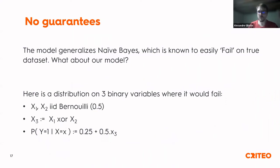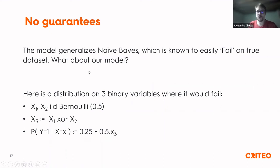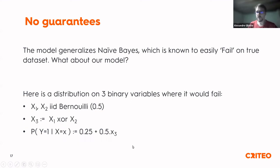An important caveat: we have no theoretical guarantees that the Markov Random Field leads to a good model. It is a generalization of Naive Bayes, which is known to have no guarantees when features are dependent. You can construct distributions on three binary variables where the model fails badly. However, in practice it was found to work surprisingly well.